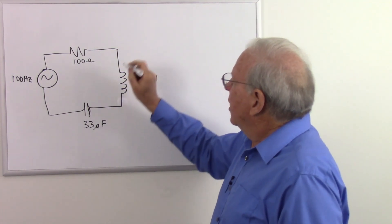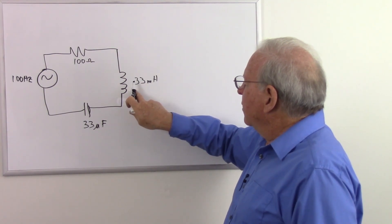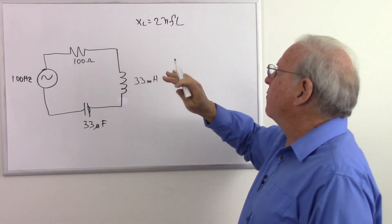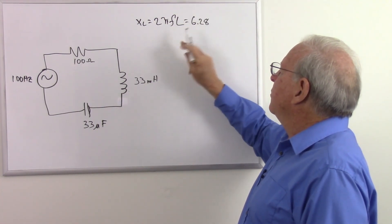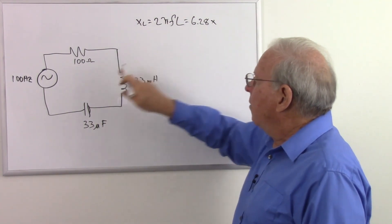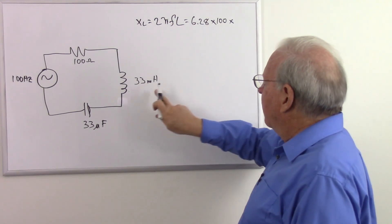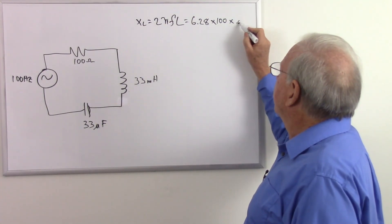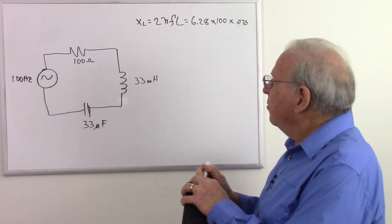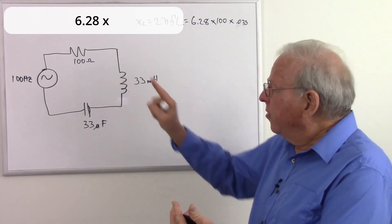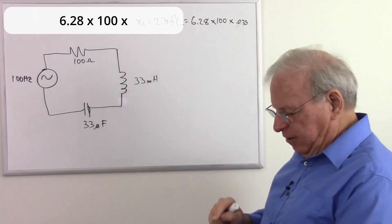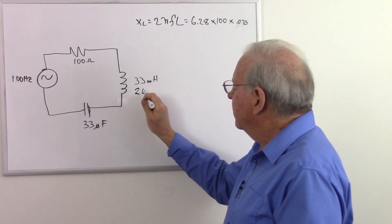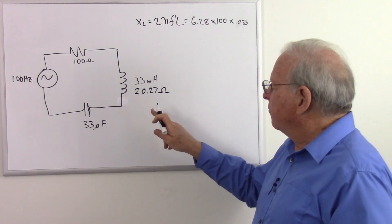Let's calculate the impedance. We want to calculate the inductive reactance, which is XL equals 2πFL. 2π is equal to 6.28, times the frequency 100, times the inductance 0.033. So 6.28 times 100 times 0.033 equals an inductive reactance of 20.27 ohms.